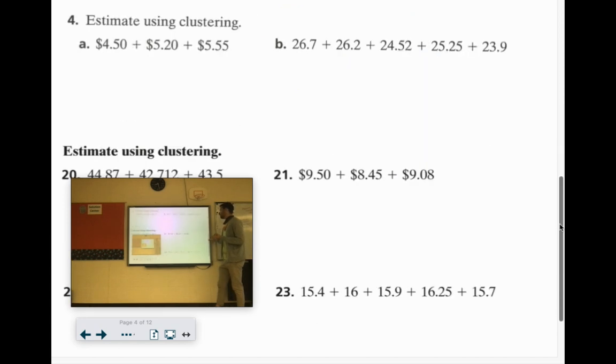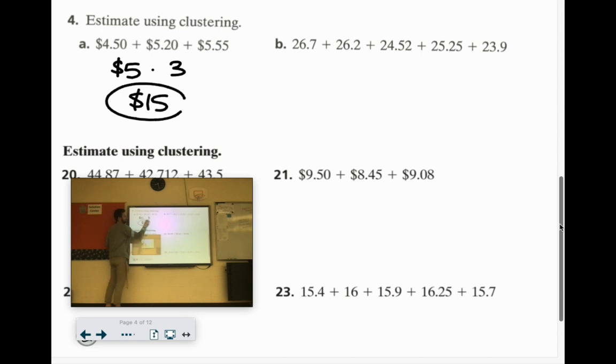So this works great when all your values are very close to each other. So we got two and then you've got four to try. So look here, 4.50, 5.20, 5.35. They're all pretty close to $5 and there's three values here. So we can just do $5 times 3 to get an estimate of $15. Over here all these numbers are pretty close to 25. So there's 1, 2, 3, 4, 5. 5 times 25. Think of quarters. If you have five quarters in your hand, how much money is that?